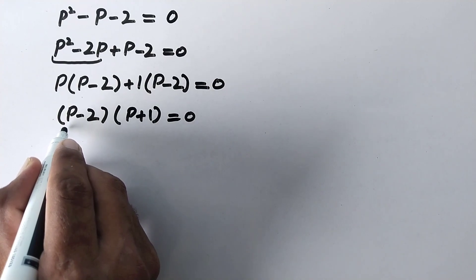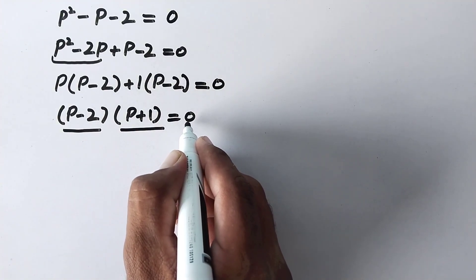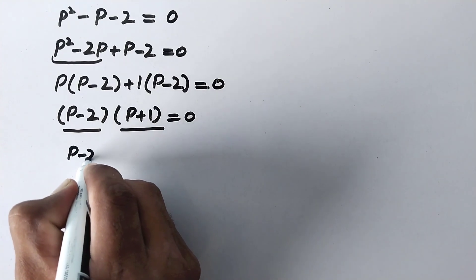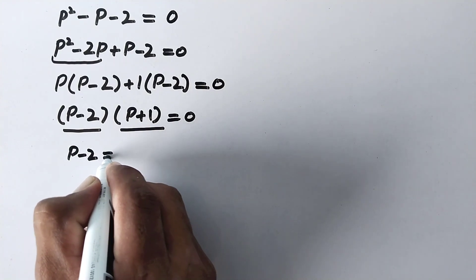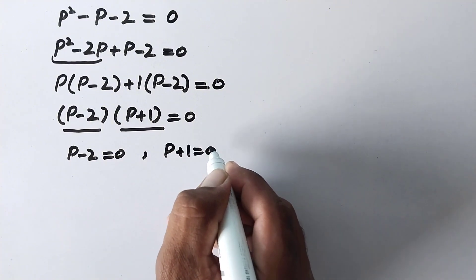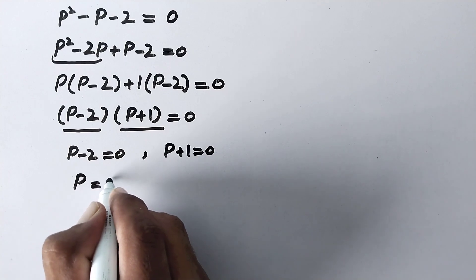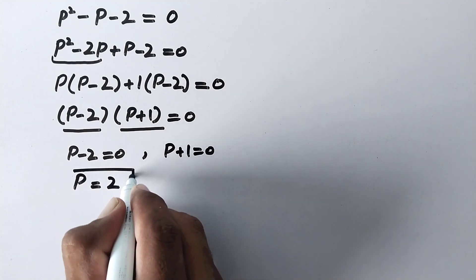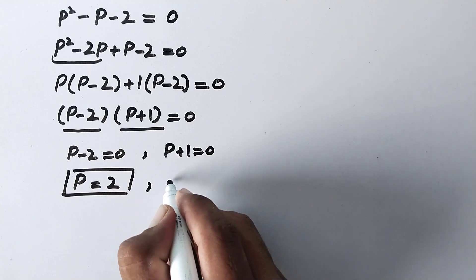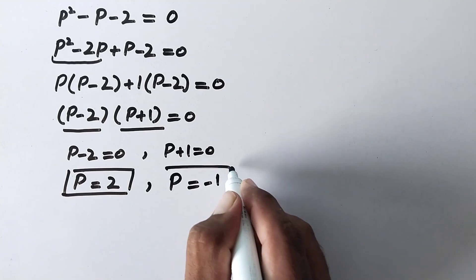We can see that (p minus 2) is a common factor, so the equation becomes (p minus 2)(p plus 1) equals 0. We now have two factors equal to zero, giving two solutions: p minus 2 equals 0 and p plus 1 equals 0, so p equals 2 or p equals minus 1.